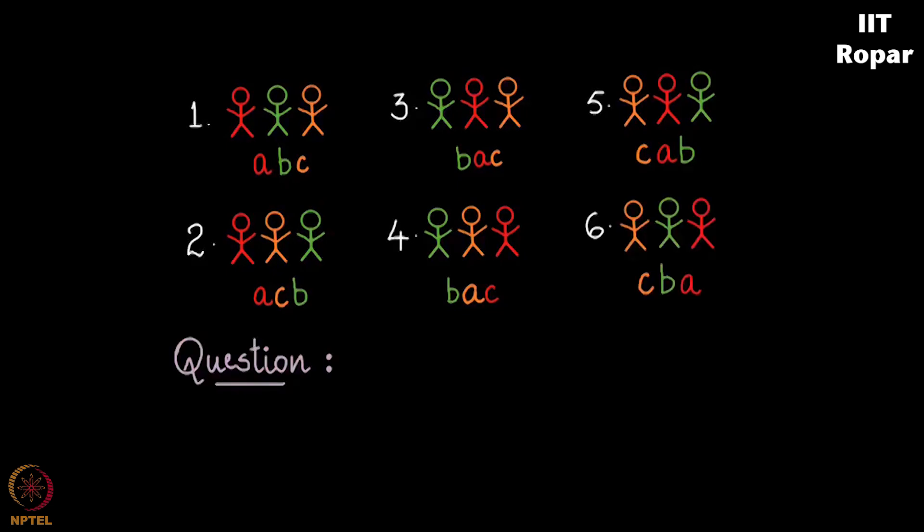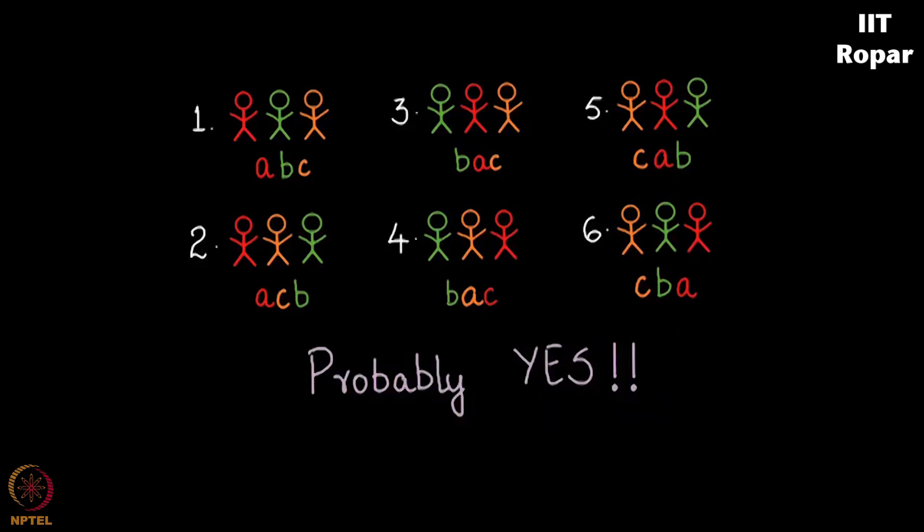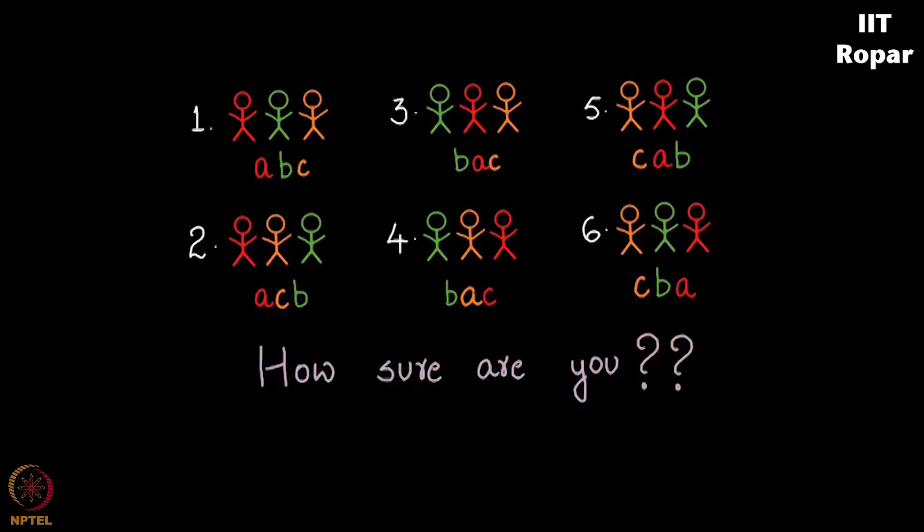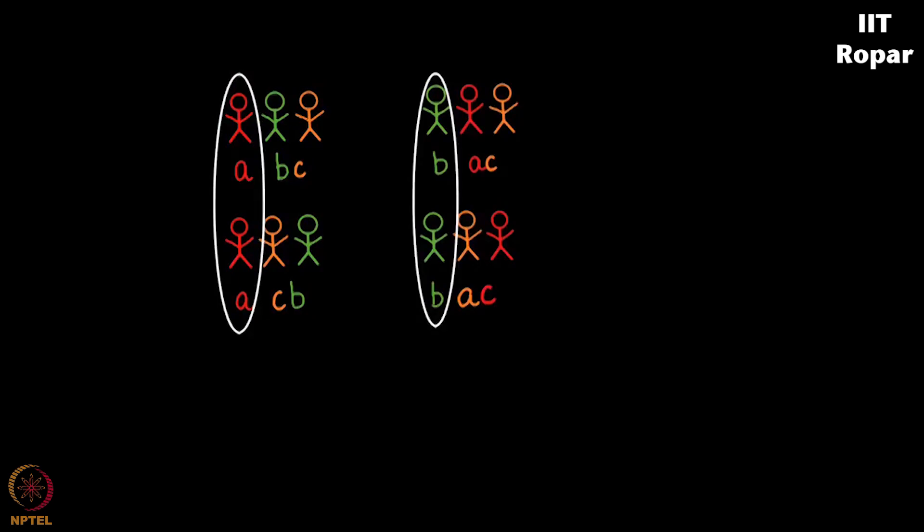Now my question is have we exhausted all the possibilities? Probably yes. How are you sure that you have not left out a possibility? That's because we went step by step, we saw all possible ways in which A in the first place can take pictures, B in the first place can take pictures, C in the first place can take pictures. There is no way we would have left out a possibility here.